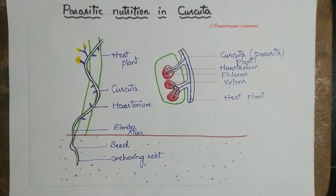Because photosynthetic pigments are absent in them, sunlight cannot be trapped. That is why Cuscuta plants depend on other plants for food — those other plants are the parasites' hosts.